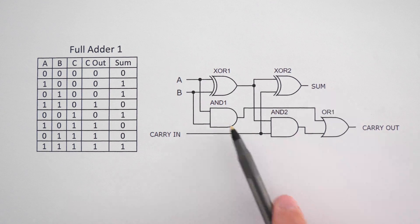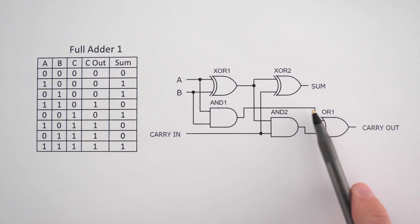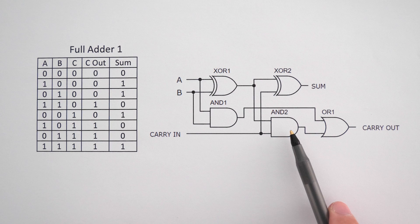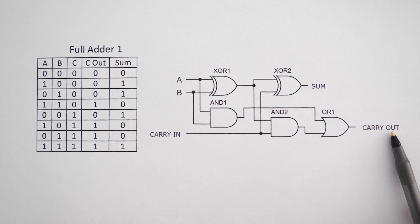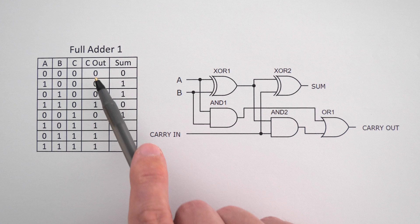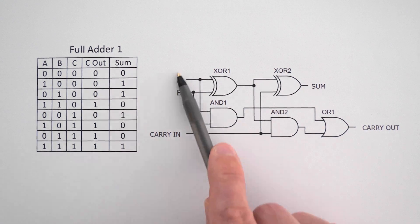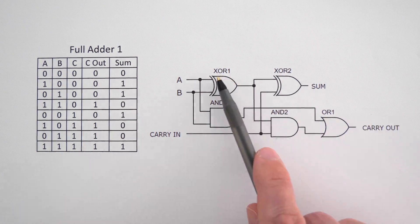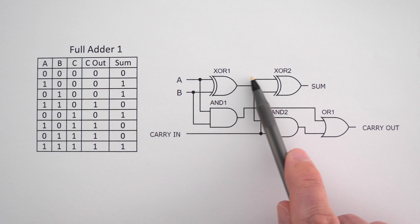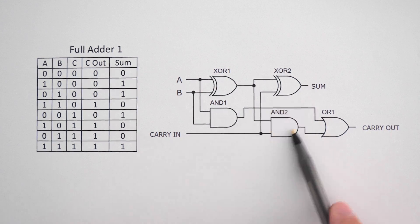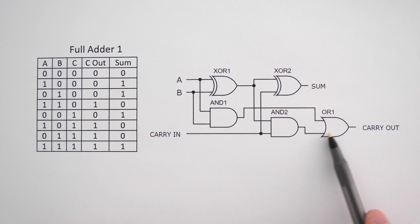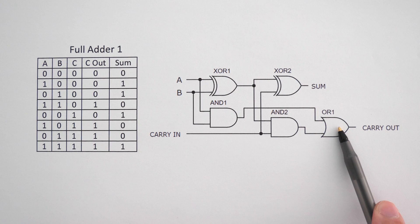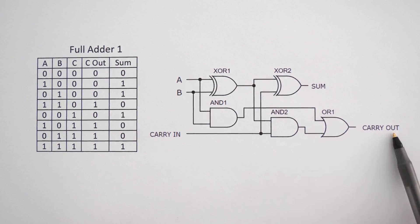Now, looking at our carry out, we have AND gate 1 and AND gate 2, and both of these feed into a final OR gate. This means that if either AND gate is on, our carry out is going to be on. So if A and B are both on, AND gate 1 is on and the output is on. If exclusive OR gate 1 was on and carry in was on, AND gate 2 feeds into the OR gate and it will also be on. If both AND gates are off, the OR gate is off and carry out will be off.